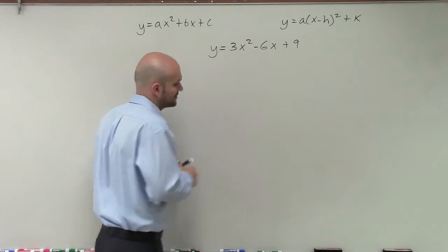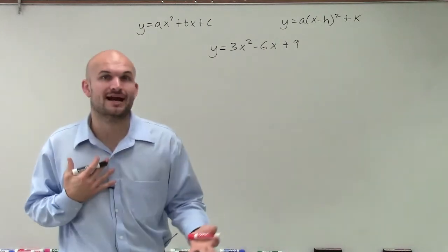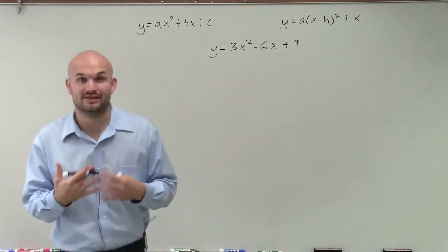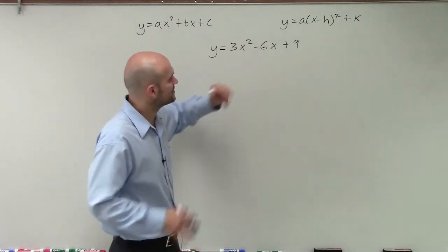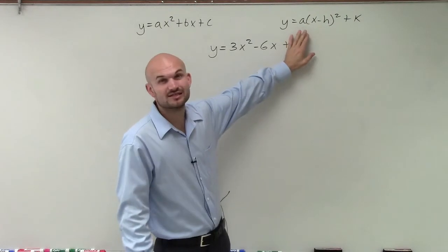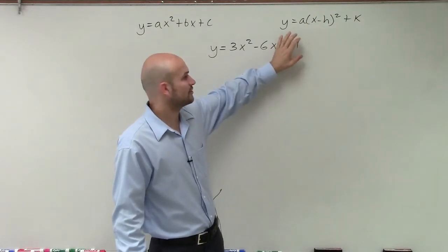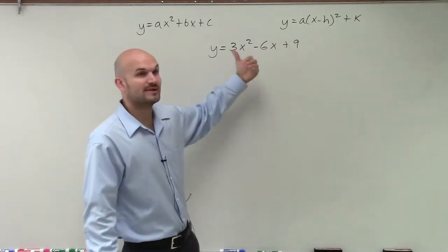Now, when I'm going to factor this out, it's going to be a little bit different the way that I do it, and I'm not going to factor a 3 out of everything. Now you can, and there's not a problem with that, but what I like to do is rather than focusing on this value c, because I know this does not create my perfect square trinomial.